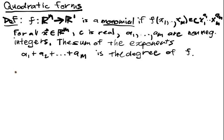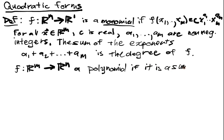F from R^M into R^N is a polynomial if it's a sum of monomial functions in each component.